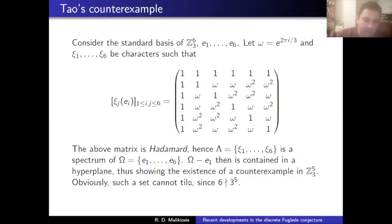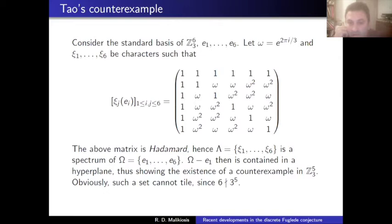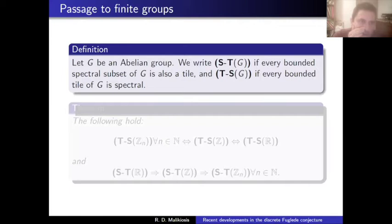You cannot have tiling because six does not divide 3^5. All counterexamples I know where spectral does not imply tiling use this divisibility condition — constructing a spectral subset whose cardinality does not divide the order of the group. It is much harder to find a tiling set that doesn't have a spectrum; this has happened in a few instances.